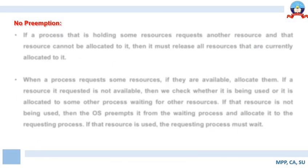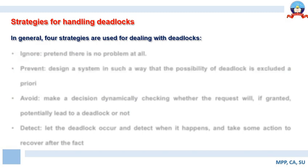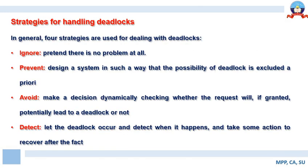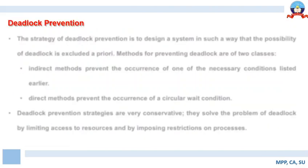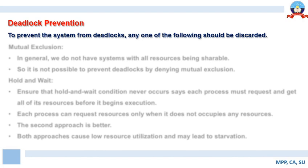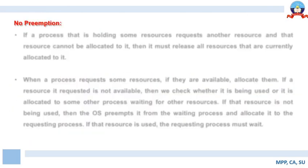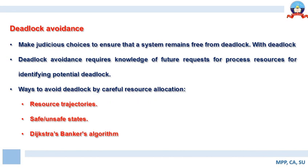In today's class we have learned about the various strategies for handling deadlock — ignore, prevent, avoid, and detect. We learned about the mechanisms for preventing deadlock, including indirect and direct methods, and the conditions mutual exclusion, hold and wait, no preemption, and circular wait. We then moved on to deadlock avoidance in brief. In the next class, we will start with deadlock avoidance in detail. Goodbye and have a good day.